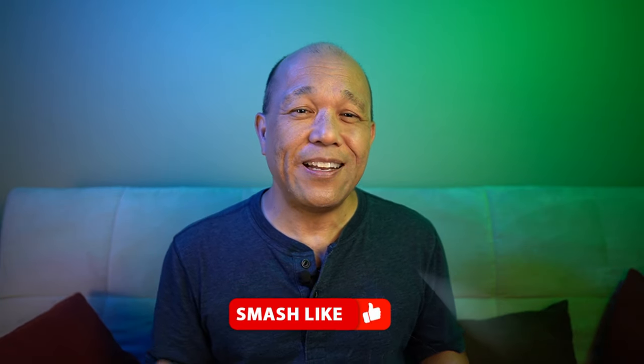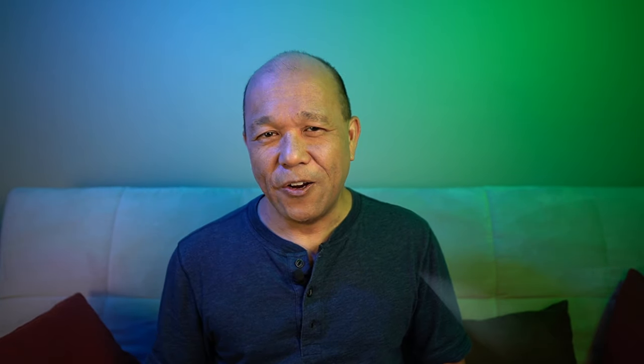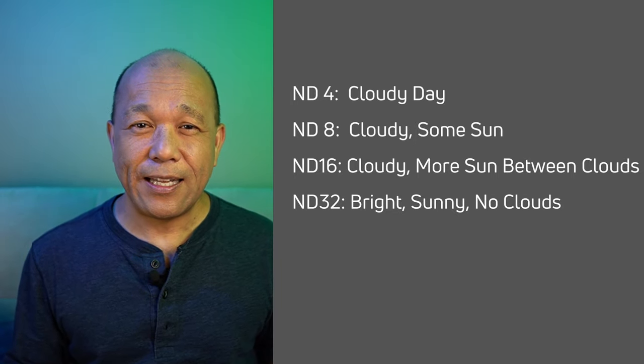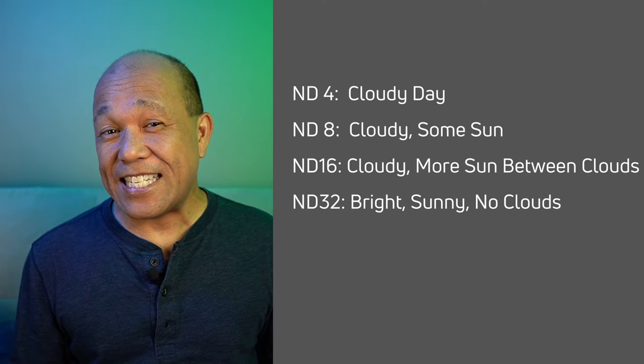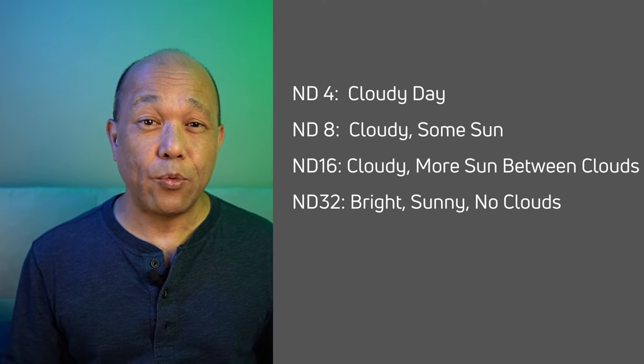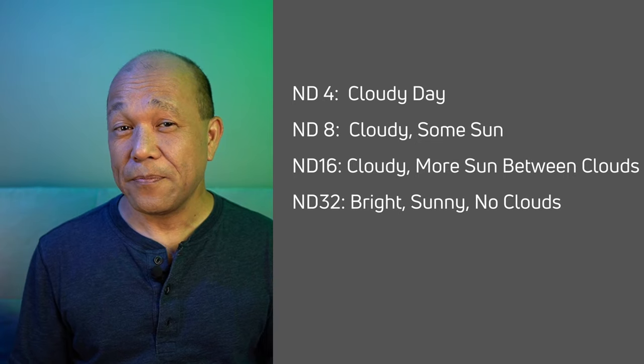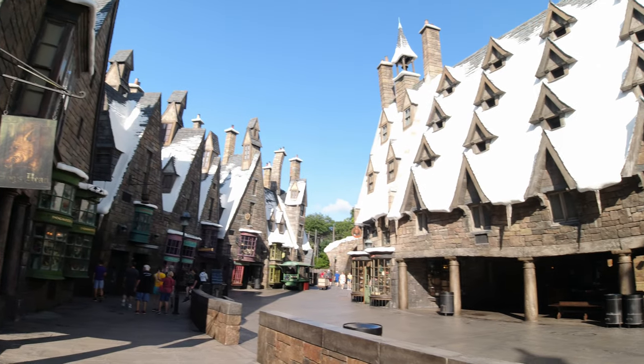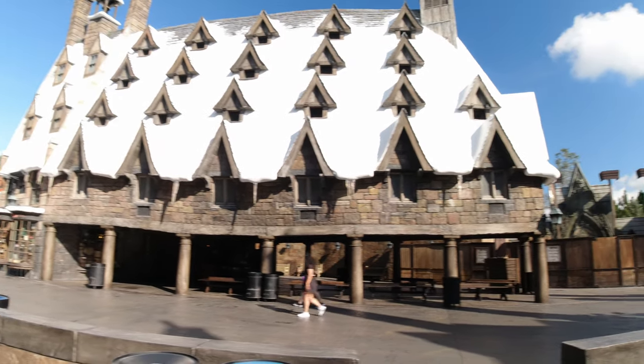These guidelines are in the description below. Use ND4 for a cloudy overcast day. ND8 for a partly cloudy day with some sun peeking through the clouds. ND16 for a partly cloudy day with lots of breaks between clouds and more sun. And ND32 for a really bright sunny day. Some filter kits come with an ND64, which works on an extremely sunny day where the area you're shooting has bright reflective light, like from a beach, street, or pavement.